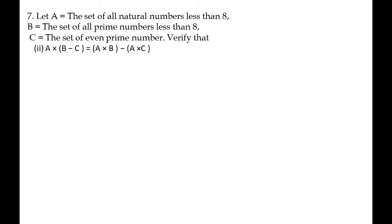Set A contains natural numbers less than 8: {1, 2, 3, 4, 5, 6, 7}. Set B contains prime numbers less than 8: {2, 3, 5, 7}. Set C contains the even prime number: {2}.